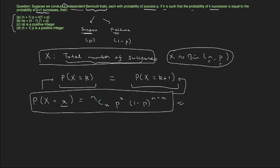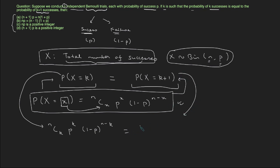Using this function, the probability that X equals K can be written as N choose K, multiplied by P raised to the power K, multiplied by 1 minus P raised to the power N minus K. Similarly, the probability that X equals K plus 1 can be written as N choose K plus 1, multiplied by P raised to the power K plus 1, multiplied by 1 minus P raised to the power N minus K plus 1.